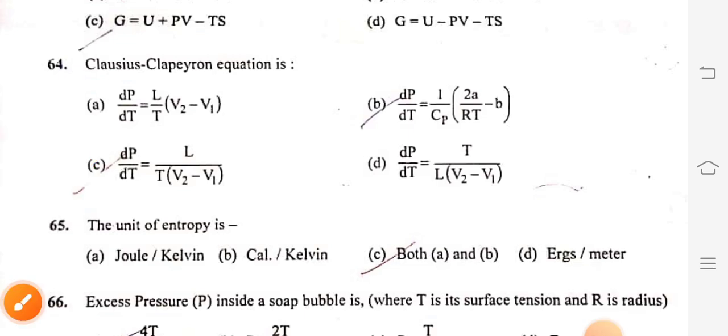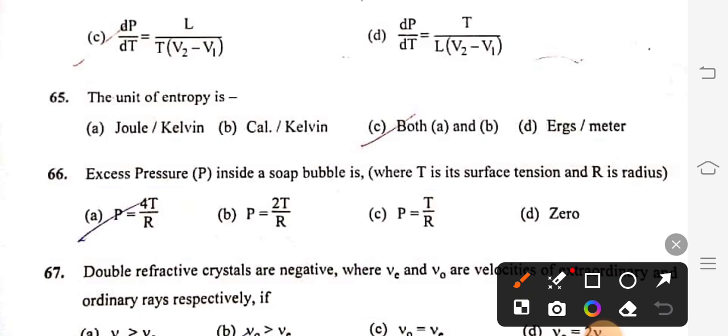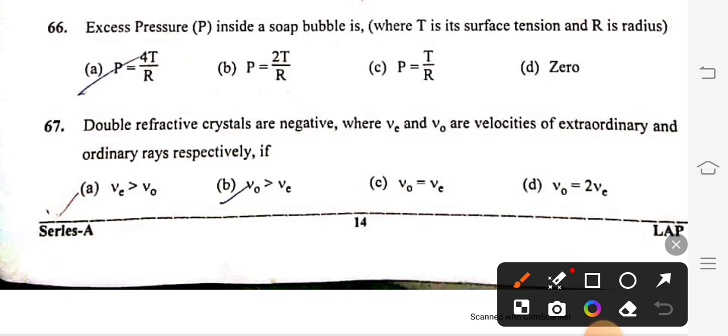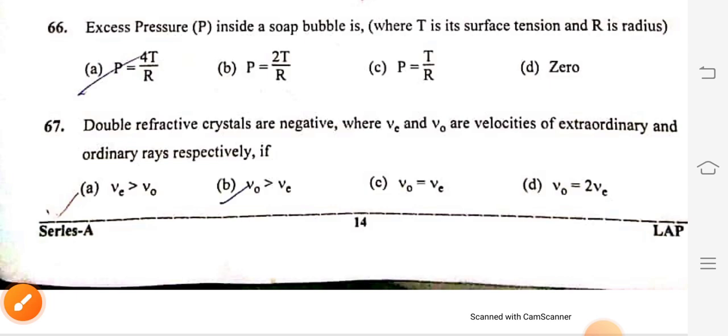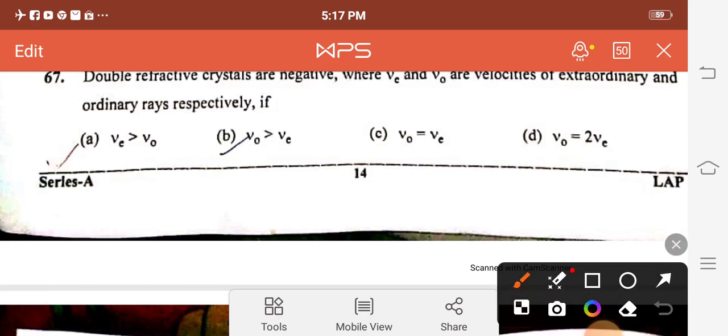Question 65: The unit of entropy is joule per kelvin, option A. Question 66: Soap bubble has two film layers, so P equals 4T by R, option A. Question 67: Double refractive crystals are negative when velocity of extraordinary wave is greater than velocity of ordinary wave, option A.